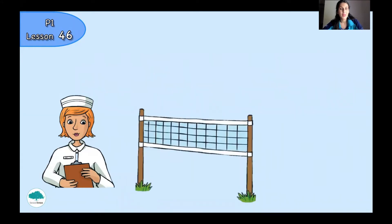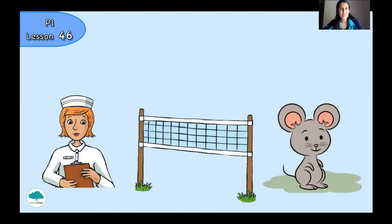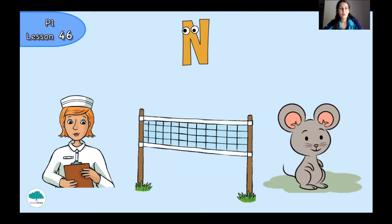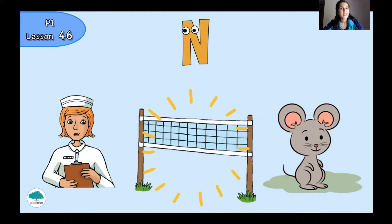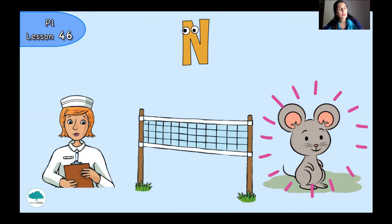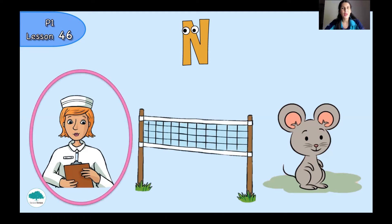Let's try one more. You can see nurse. We have to circle the picture with the same sound N. Which picture are you going to circle? Nurse — yes, very good! We have to circle nurse because the beginning sound is N. And the second picture: nurse, nuts, net, or mouth — which one do you want to choose?